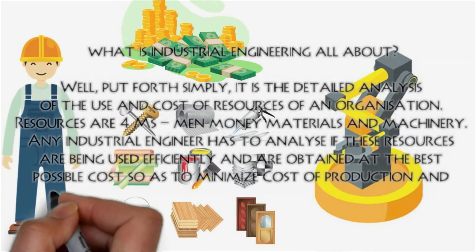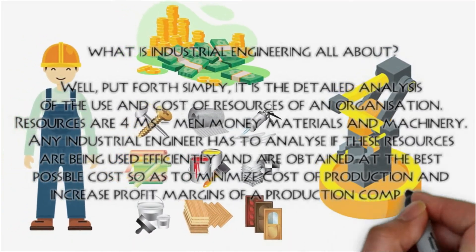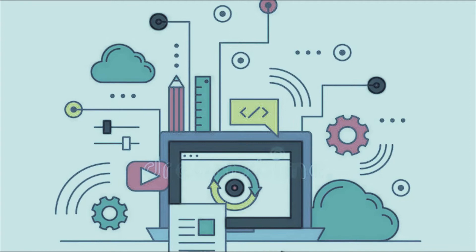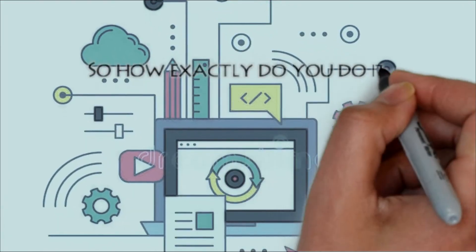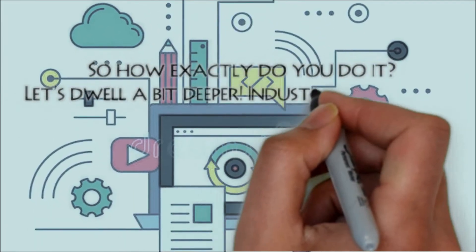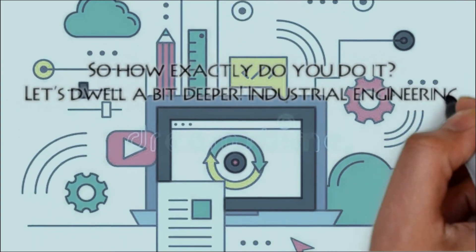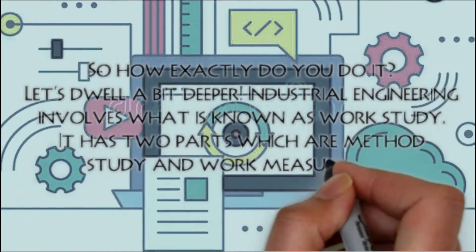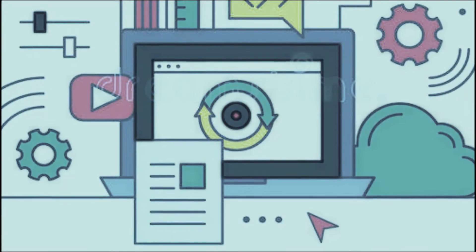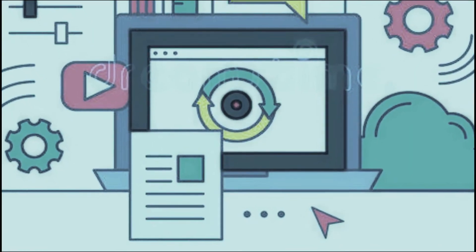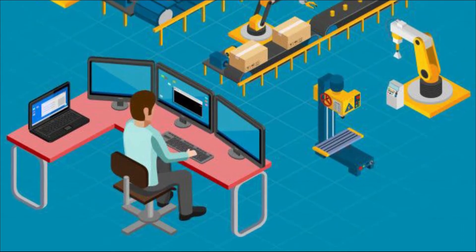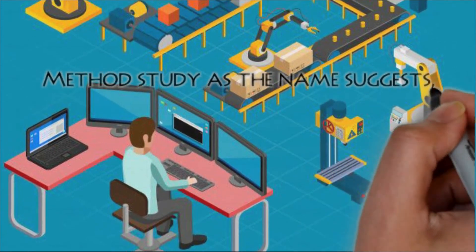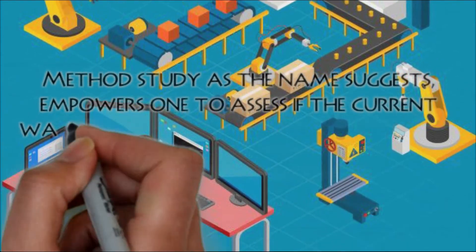So as to minimize cost of production and increase profit margins in terms of a production company. Industrial engineering involves what is known as work study. It has two parts: method study and work measurement. Method study, as the name suggests, empowers one to assess if the current way of utilizing resources in a particular production process is correct, or if there is a better way available.